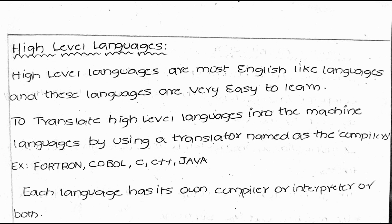Examples of high-level languages include Fortran, COBOL, C++, and Java. Each language has its own compiler and interpreter, or both. For example, some languages use only an interpreter or only a compiler, but Java uses both a built-in interpreter and compiler.